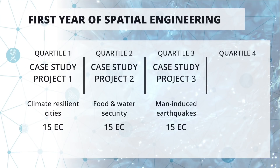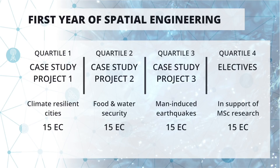You also have to mix this with what your peers in your working group are learning, and you have to know what they are doing. After these three projects, the first year ends with a 10-week specialization phase in which you can select two electives from any university that helps you specialize in a field you desire. We only ask that your elective helps you with your research in the second year.